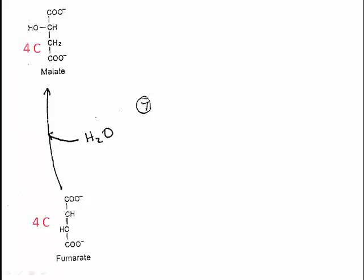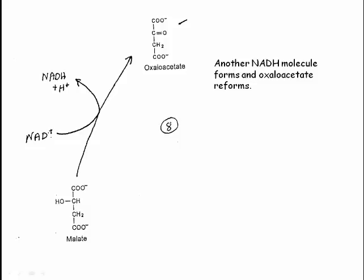Next step, fumarate, four-carbon molecule, gets converted to malate. Some water gets added, and in the next step—